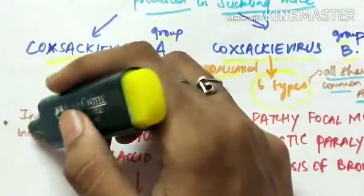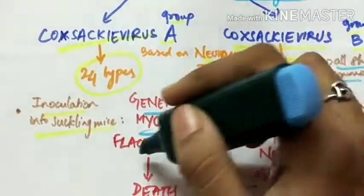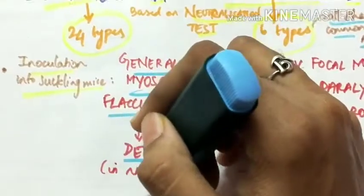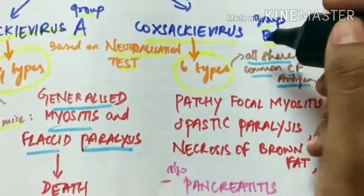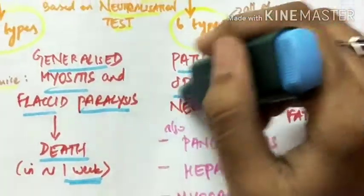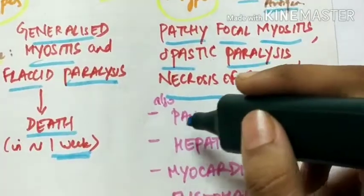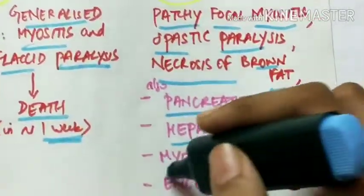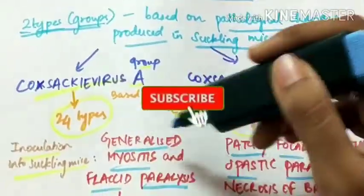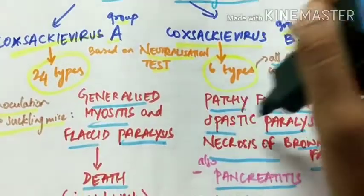When Coxsackie A viruses are inoculated into suckling mice, they produce generalized myositis and flaccid paralysis, which progresses to death of the mice in approximately one week. Coxsackie B virus inoculated into suckling mice produces patchy focal myositis, spastic paralysis, necrosis of brown fat, and can also cause pancreatitis, hepatitis, myocarditis, and encephalitis.